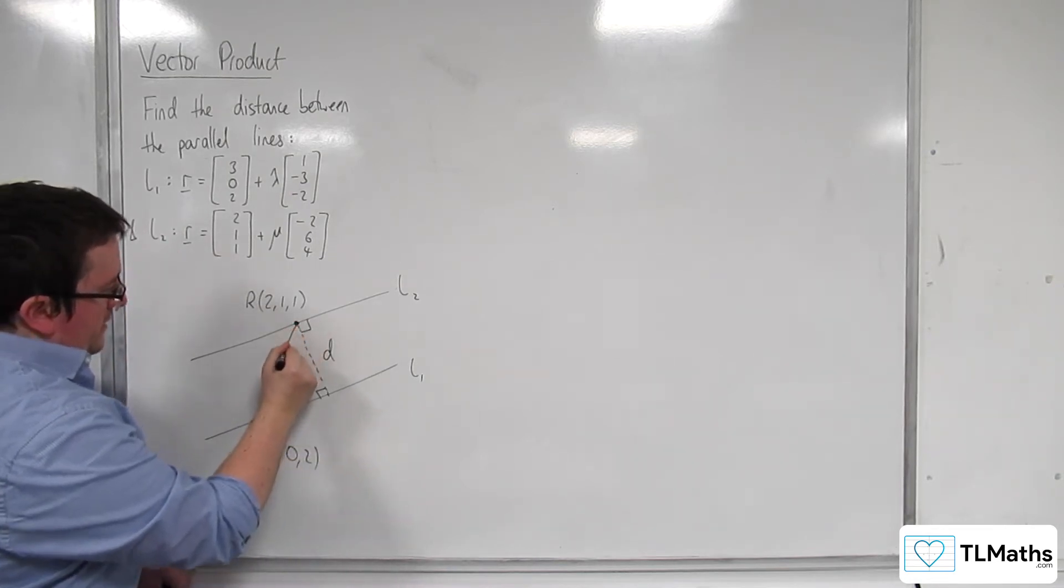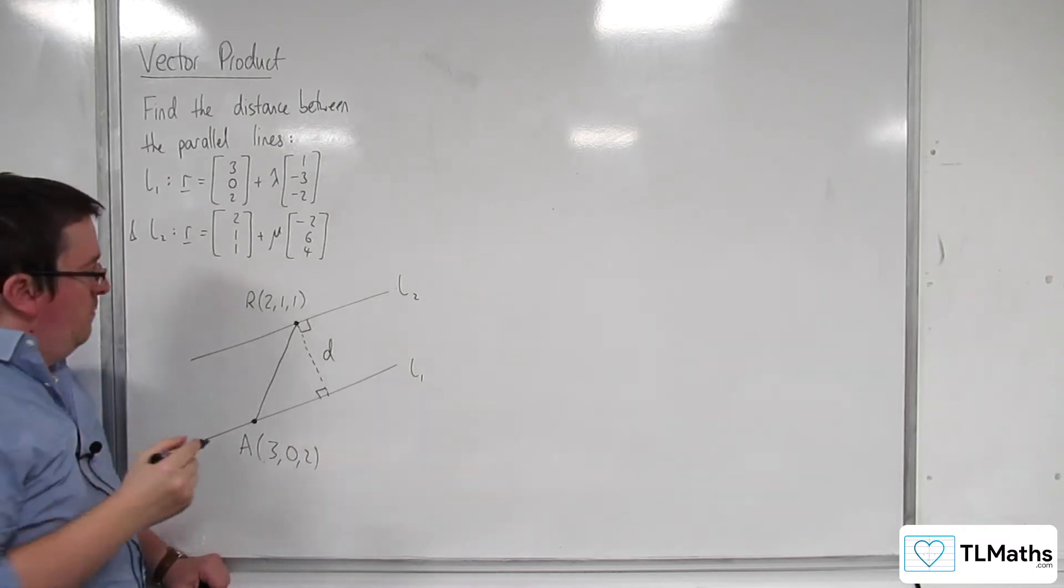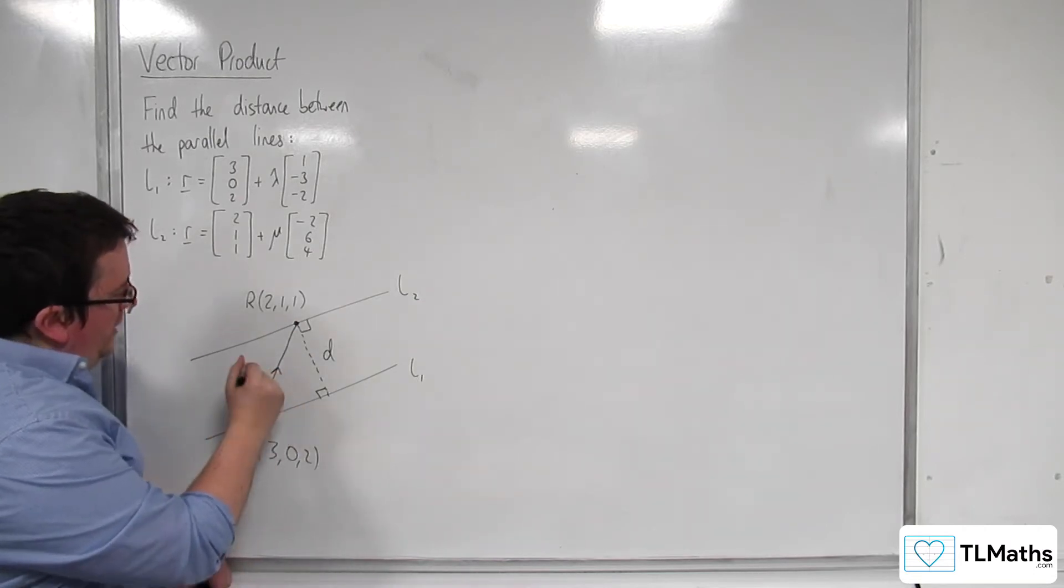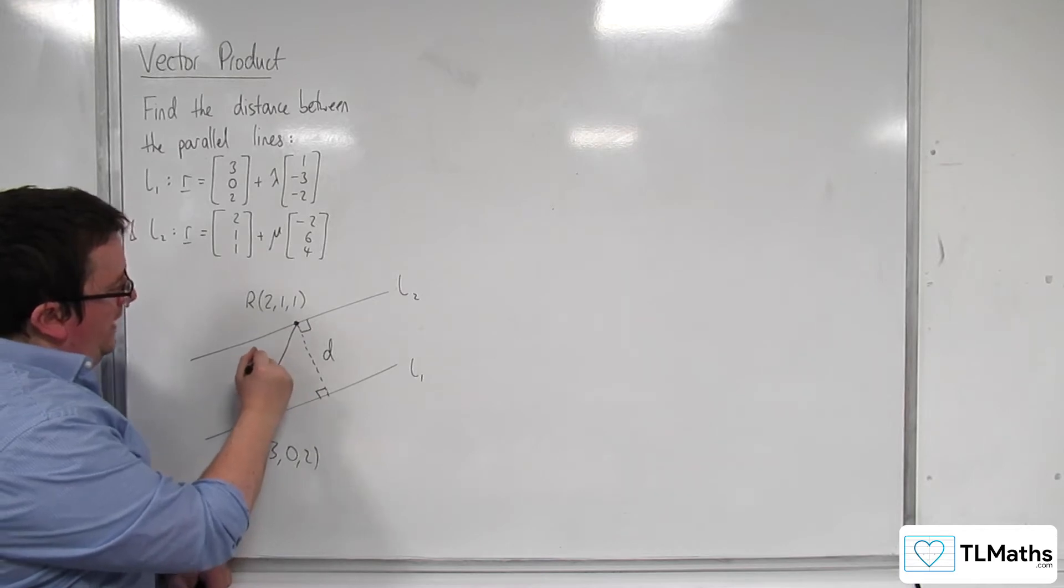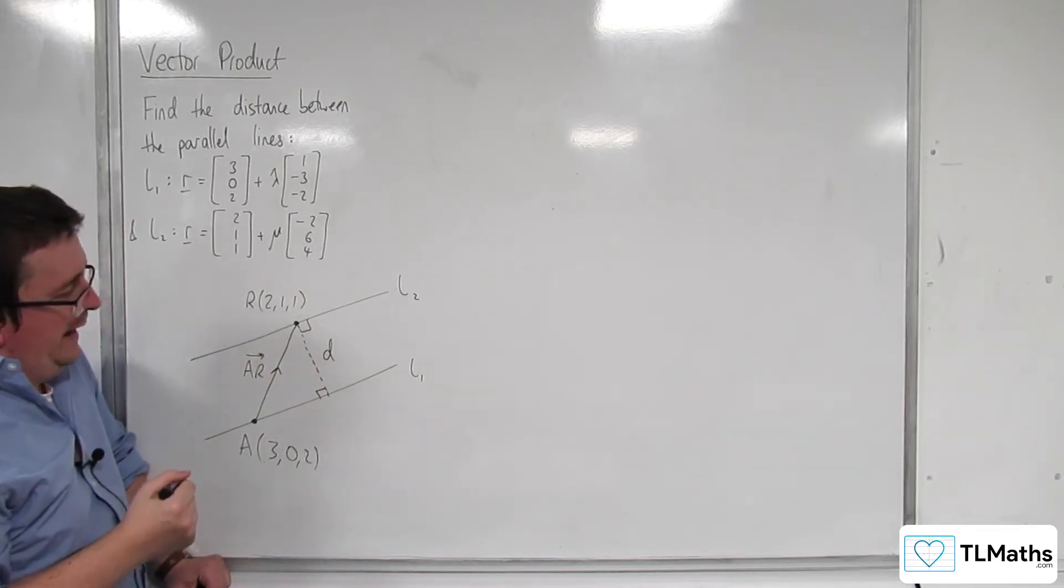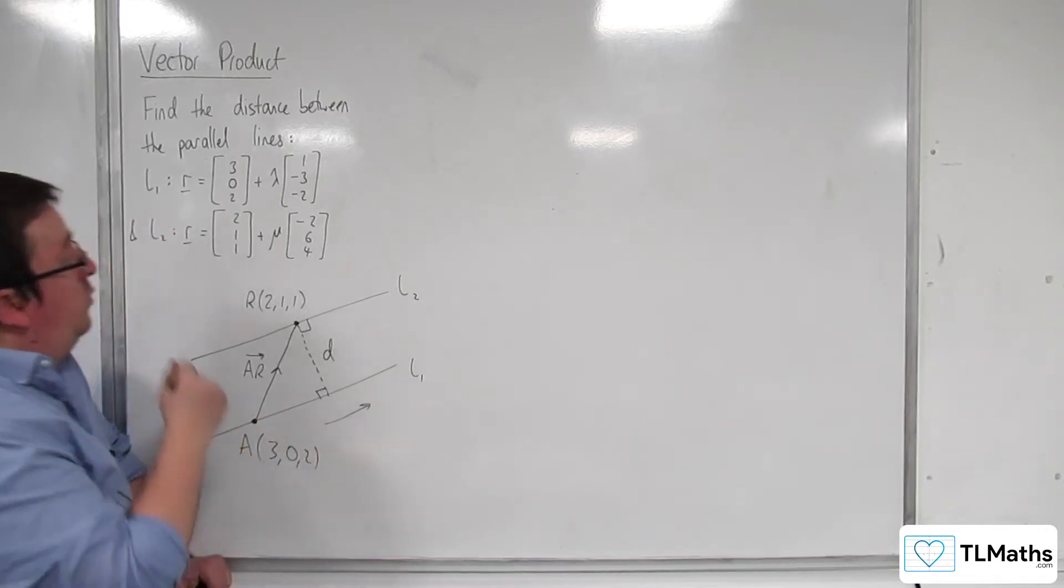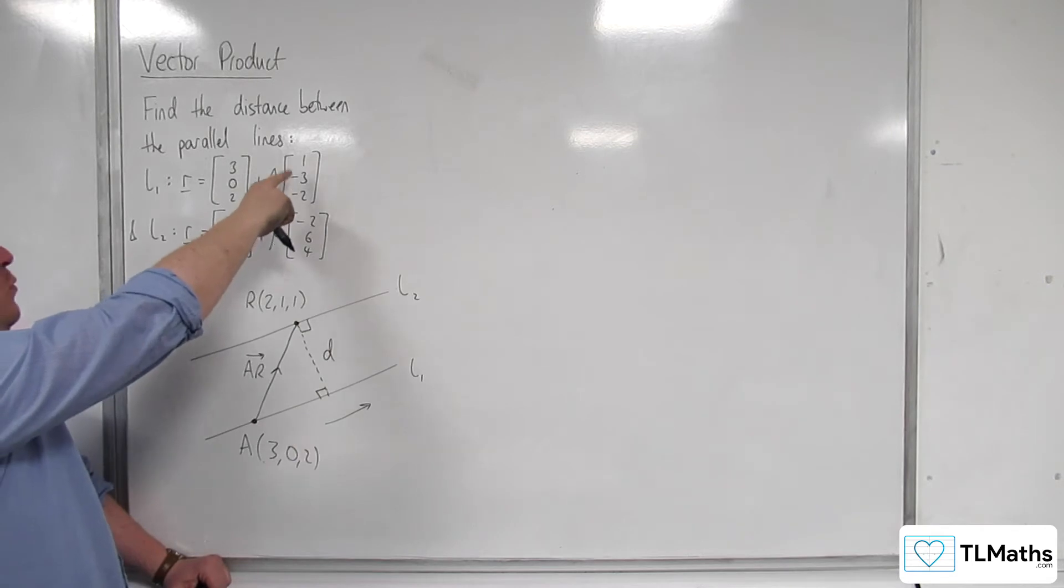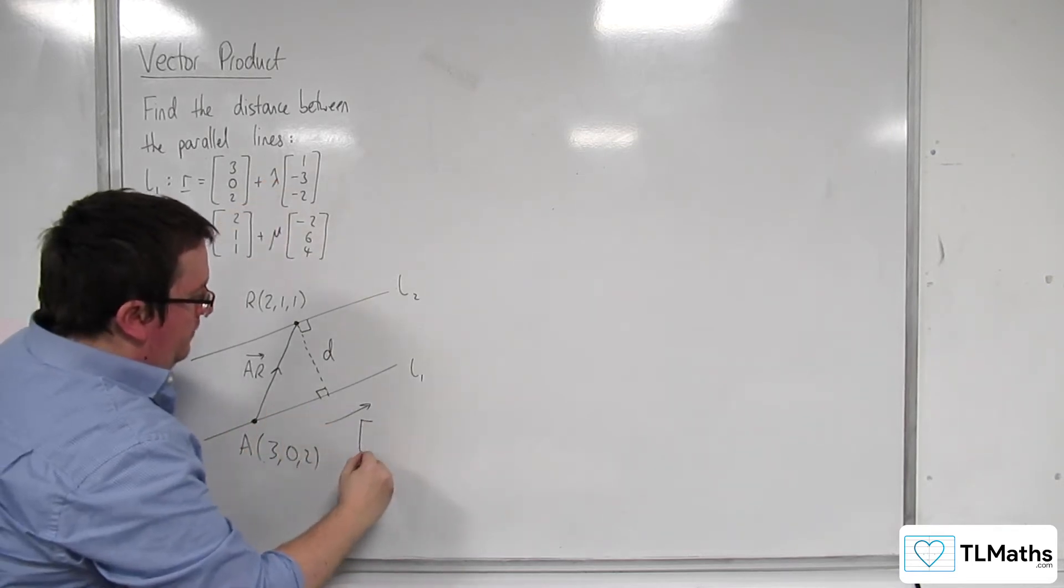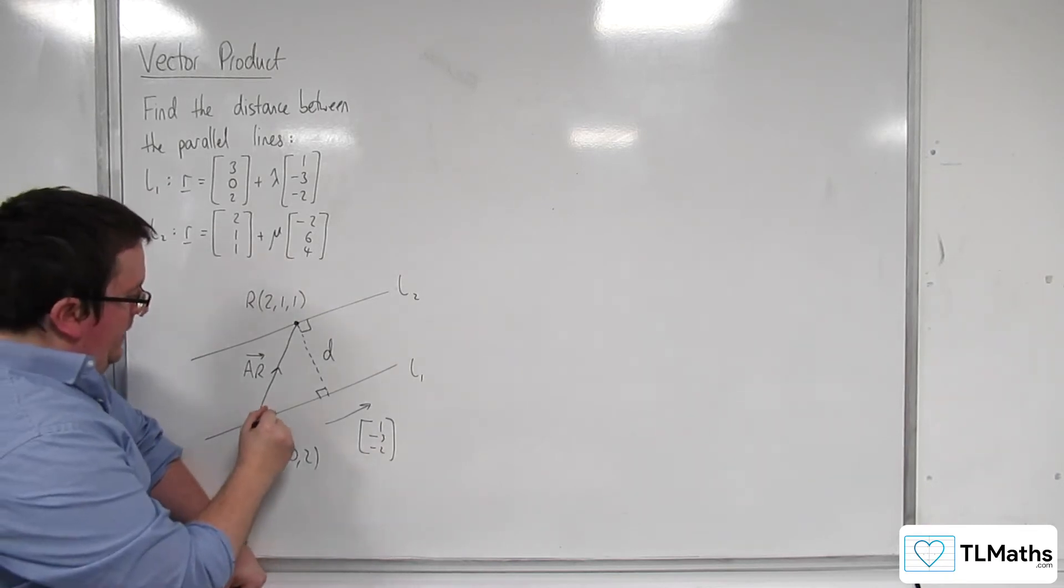And I'm going to consider AR. Now you might be able to see where this is going, because if I've got AR, I can work out its length. I know the direction of L1, because that will be 1, minus 3, minus 2. So I know it's going in that direction, and I can talk about this angle here.